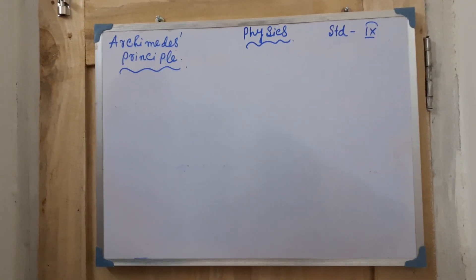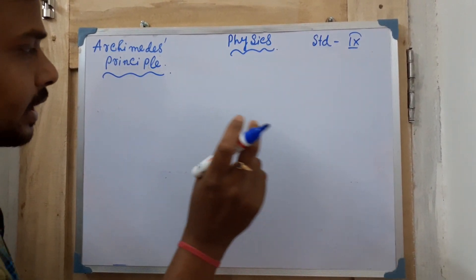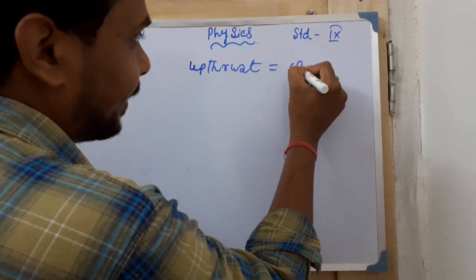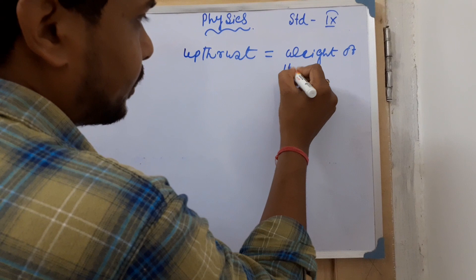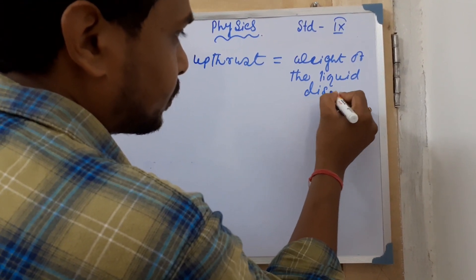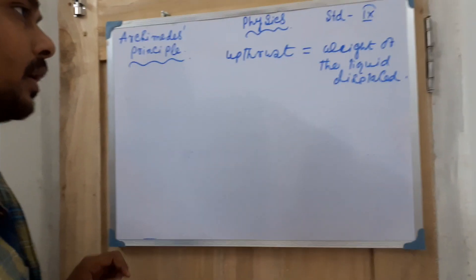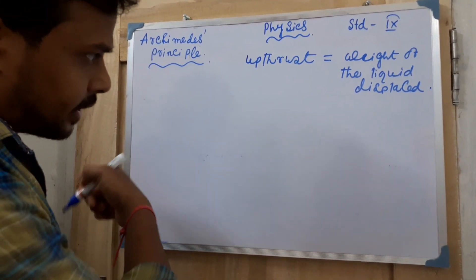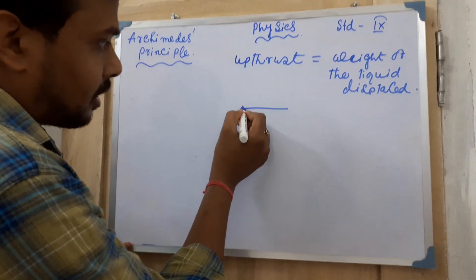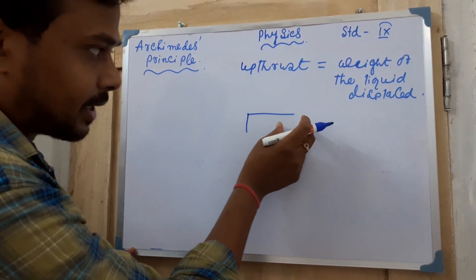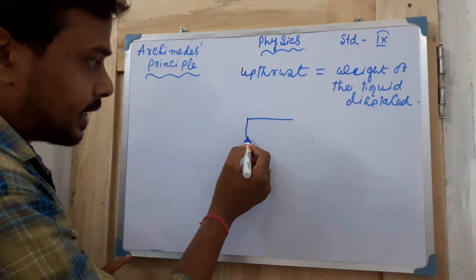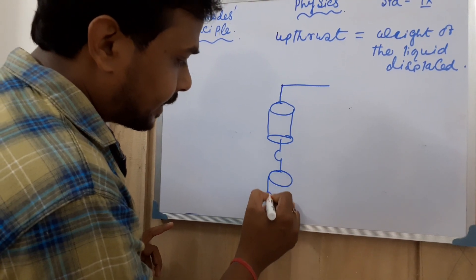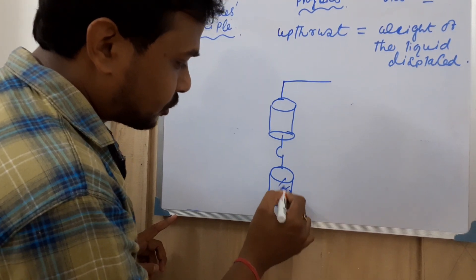Now let's look at the experimental verification. In your book, one hand of a physical balance is connected first to a hollow cylinder and also to a solid cylinder via a spring. So there are two cylinders — cylinder A (solid) and cylinder B (hollow) — connected to the physical balance.